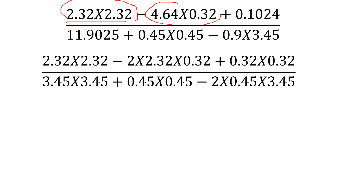Here we are going to write A minus B. So minus will give us minus 2AB. So this 464 is going to be 2.32 into 2.